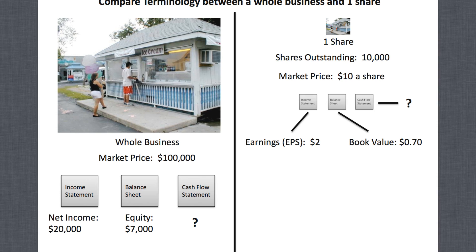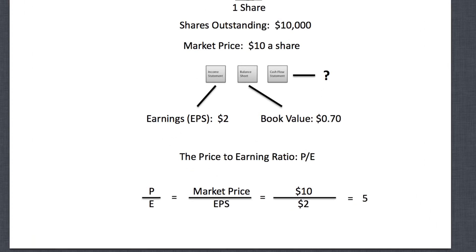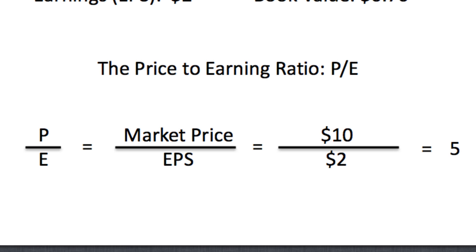When valuing the business, we value one share the same exact way we'd value the entire business. Now I'm going to teach something new here: the price-to-earnings ratio, often referred to as the P/E. All you do is take the market price — the P — divided by the E, which is the earnings per share. For Nancy's business, the market price is ten dollars divided by the EPS of two dollars, which gives you a ratio of five — no units, just a ratio of five.